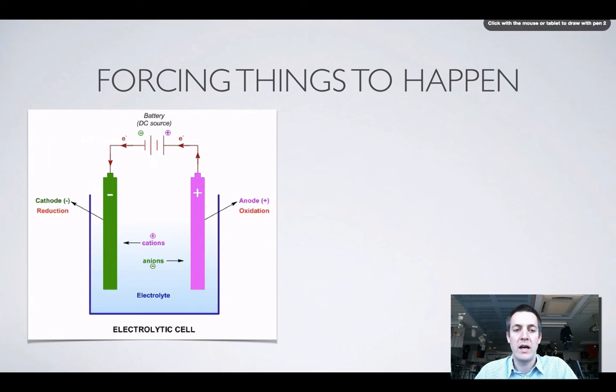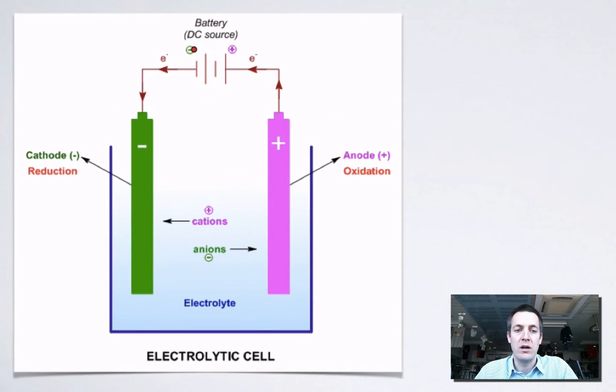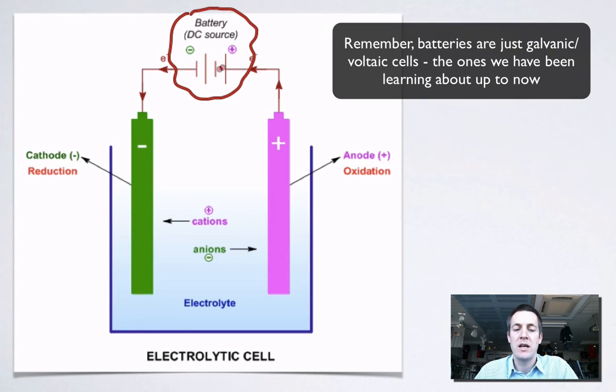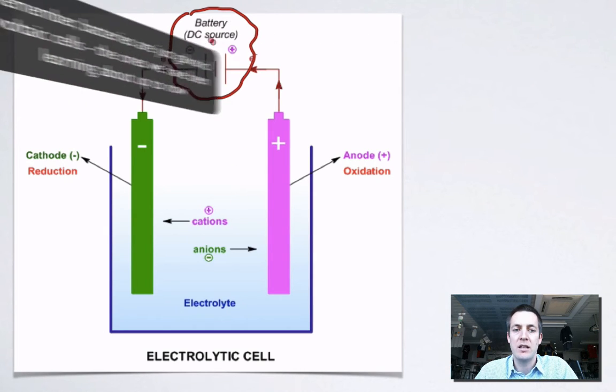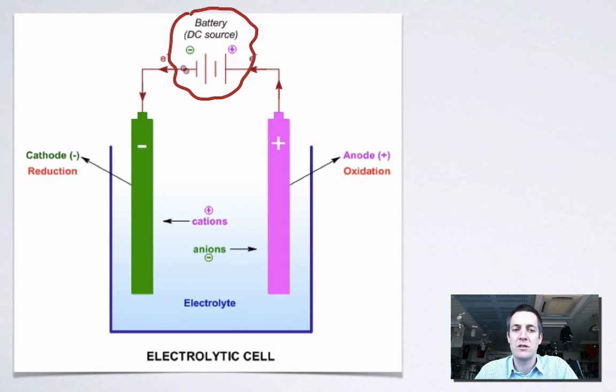The answer is that here we're going to actually connect our electrodes to an external power supply. And this is very important, because in a battery the electricity came from the reactions taking place in the cell. In an electrolytic cell the electricity is coming from an external power source and that power source forces electrons down onto one of the electrodes. And because there's lots of electrons on this electrode it's got a negative charge.